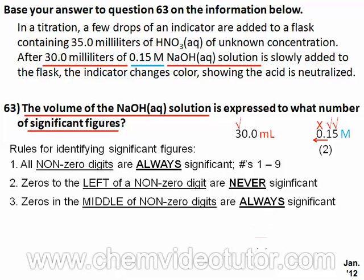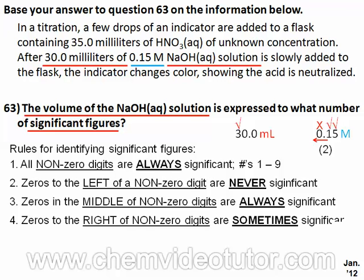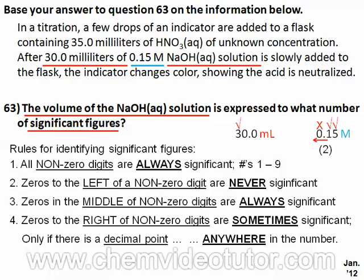Let's make room for the fourth and final rule, which says zeroes to the right of non-zero digits are sometimes significant. That sometimes holds true only if there is a decimal point, and that decimal point can be anywhere in the number. So in the 30.0 measurement, it is important to point out that both zeroes are to the right of the 3 and there is a decimal point. So both zeroes are significant, giving this measurement a total of three significant figures, which now completes the answer to this question.